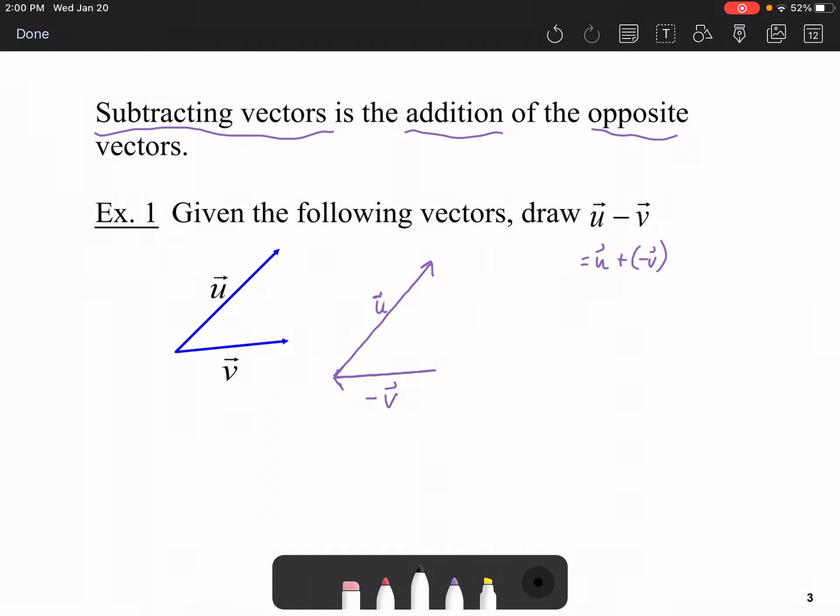And now U plus negative V is just this vector right here, U minus V. That's how you draw the subtraction of two vectors.